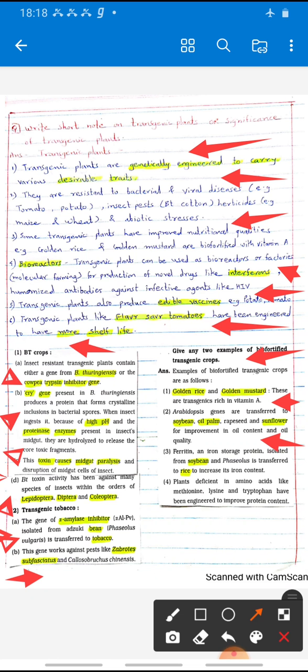Some genes are transferred to soybean, oil palm, and sunflower for improved oil content or oil quality.